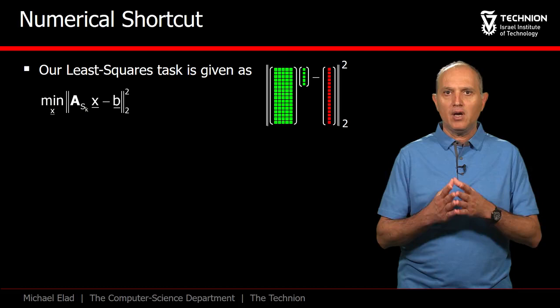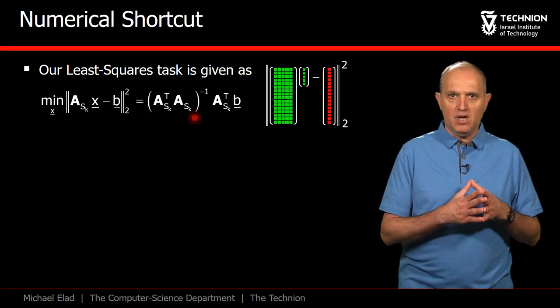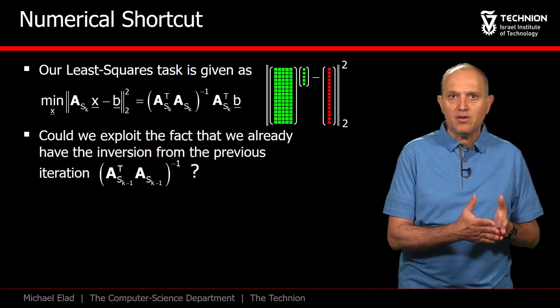Still on the matter of the least squares that updates xk, there is an effective numerical shortcut worth mentioning. The regular solution involves an inversion of a gram matrix of size k by k computed for the matrix Ask. However,